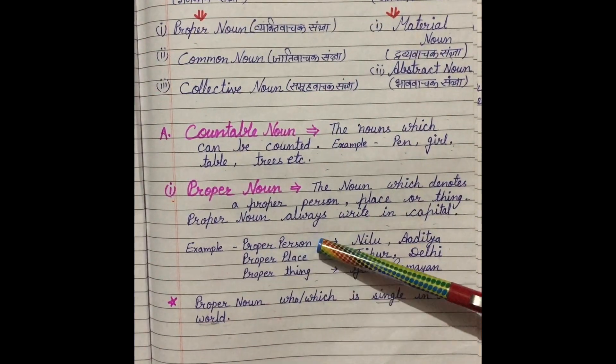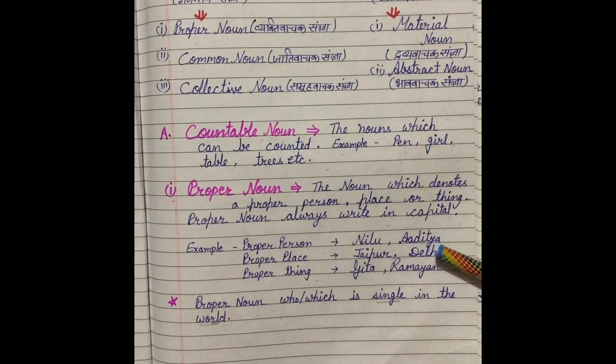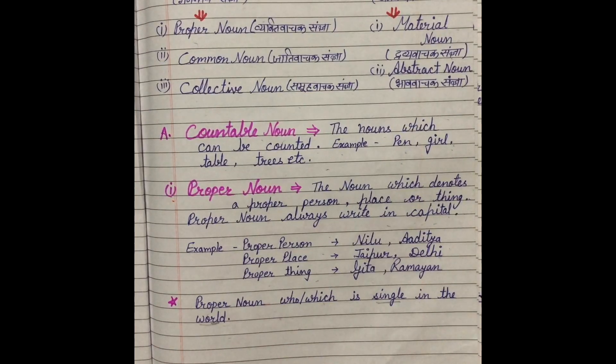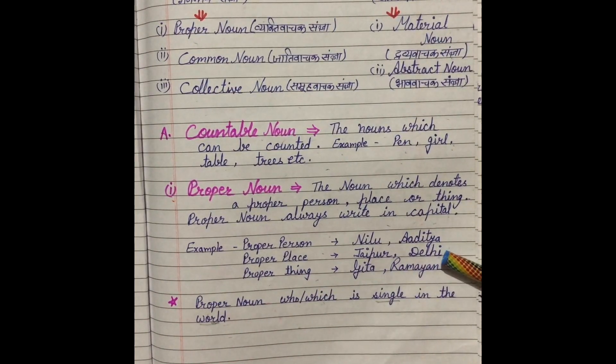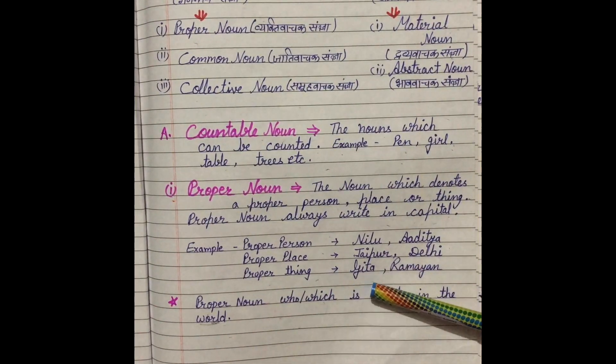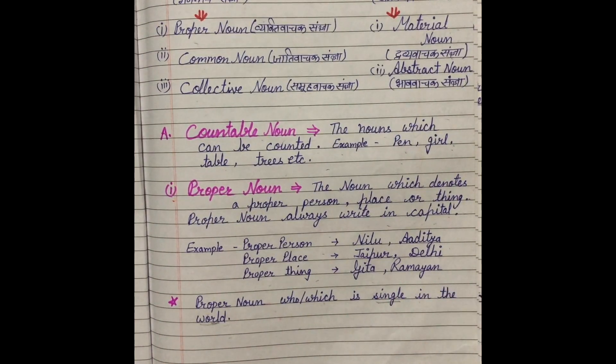For example, proper person like Nilu, Aditya, any other name, any other person. Kyunki hum sab single hain, humare jaisa koi dusra nahi hai. Name similar ho sakti hai, but jo humare qualities hain, jo humare looks hain, woh dusre mein nahi ho sakti. Proper place like Jaipur, Delhi. Proper thing like Gita, Ramayan - these are proper nouns. Yeh single hain, inke jaisa dusra nahi hai.